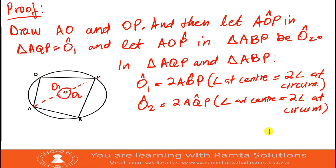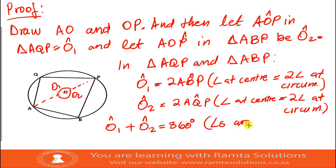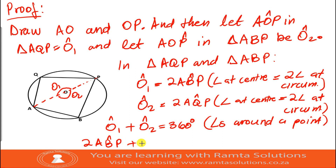One thing we know is that angle O1 plus angle O2 equals 360 degrees, because they are angles around a point. We said angle O1 equals two times angle ABP, and angle O2 equals two times angle AQP, so together they equal 360 degrees. There is a common factor of two, so we can divide by two throughout.